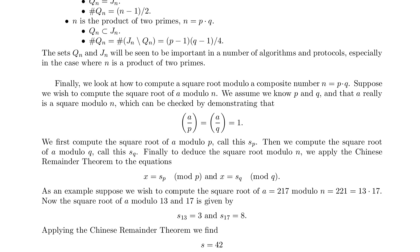Finally, we look at how to compute a square root modulo a composite number n equals p times q. Suppose we wish to compute the square root of a modulo n. We assume we know p and q, and that a really is a square modulo n, which can be checked by demonstrating that (a/p) equals (a/q) equals 1.